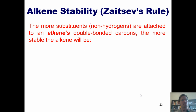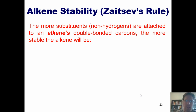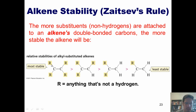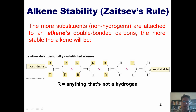This brings us to our final topic: alkene stability. Similar to how tertiary carbocations are more stable than secondary, which are more stable than primary, the more substituents — non-hydrogens — attached to an alkene's doubly bonded carbons, the more stable that alkene will be. The most stable alkene has all four positions on the doubly bonded carbons occupied by non-hydrogens, followed by three, then two, then one substituent being the least stable.